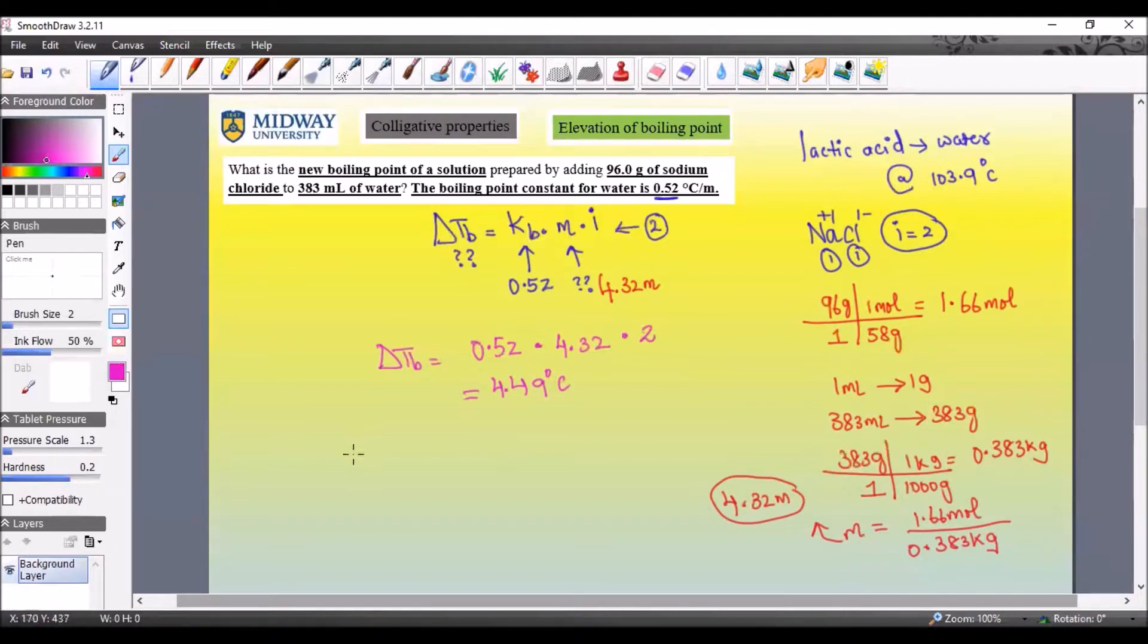Now in both cases, the previous one was cyclohexane but even if you assume it's water, this one water boils at 100 degrees, and this one was 100 plus 4.49 degrees Celsius, which is 104.49 degrees Celsius. If you compare this value right here to this value, the Van't Hoff factor for lactic acid is 1, whereas the Van't Hoff factor for sodium chloride is 2.